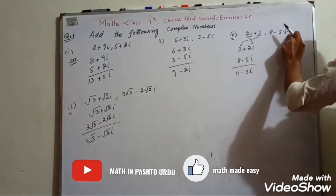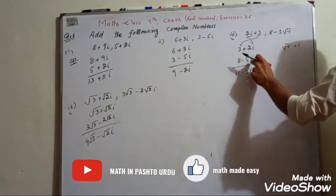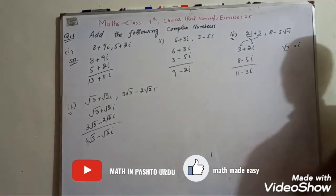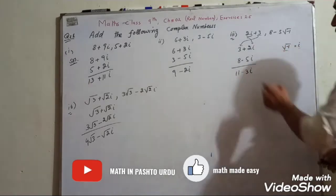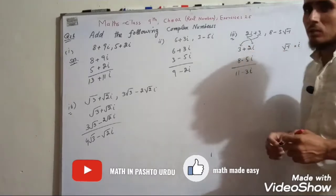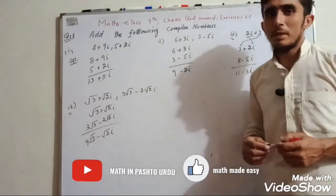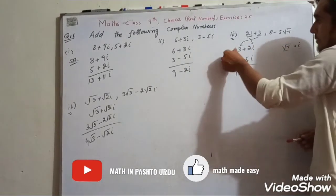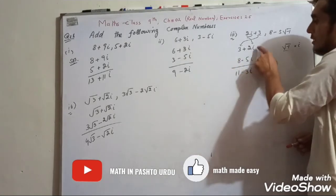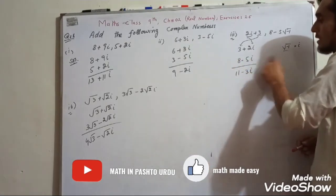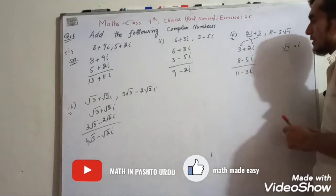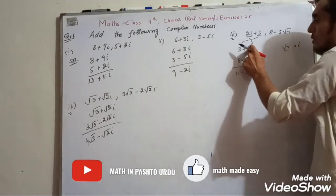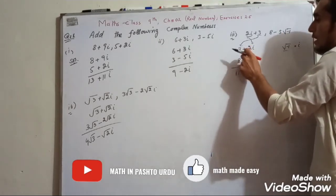Then we write 8 minus 5 root of minus 1, and root of minus 1 is equal to iota. Adding the real parts: 3 plus 8 equals 11. For the imaginary parts: 2 minus 5 iota gives minus 3 iota.